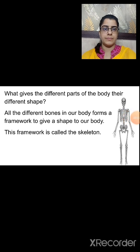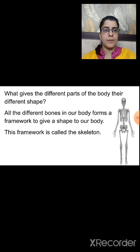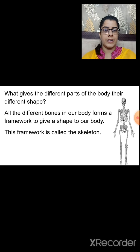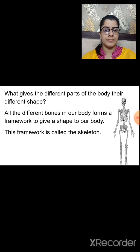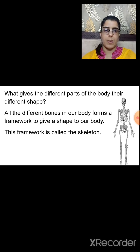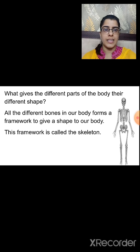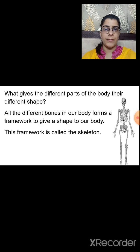Now observe your body — you will notice that different parts of the body have different shapes. What gives different parts of the body their different shape? All the different bones in our body form a framework to give shape to our body. We have studied earlier that the human skeleton consists of 305 bones at the time of birth, but slowly these bones are reduced to 206, as some of the bones get fused with each other.